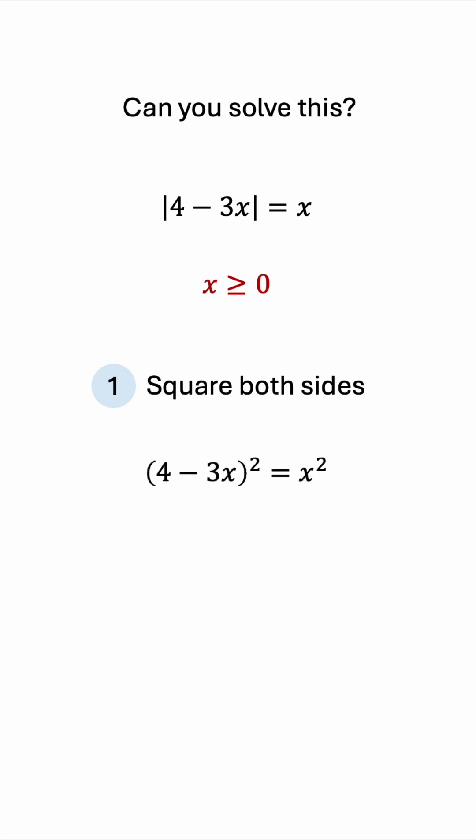Squaring both sides, we get the following equation after expanding. We can group like terms and then divide everything by 8 to simplify the quadratic equation.